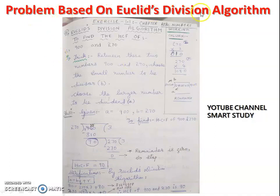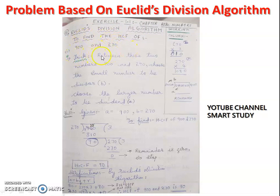This problem is from exercise 1.1 of the SCERT textbook. It asks us to find the HCF of 900 and 270. Between these two numbers, we choose the smaller number as divisor B and the larger number as dividend A. So A equals 900 and B equals 270.